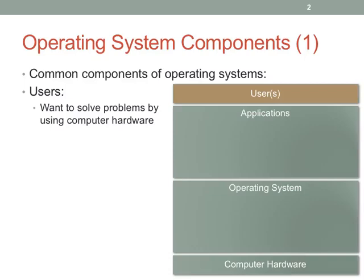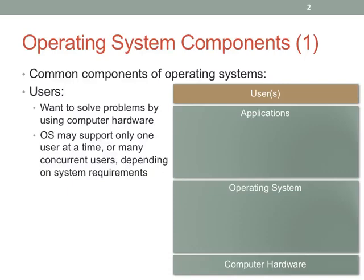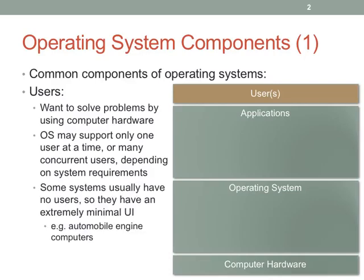A user just wants to use a computer to do something — maybe play computer games, maybe take photos if it's an OS running for a digital camera. They have a problem they'd like to solve using computer hardware. Even at this level you see a wide range of behaviors: some OSes are single-user, like Windows was for a long time; some support many concurrent users, like Unix; and some have no users most of the time, like an airplane black box.